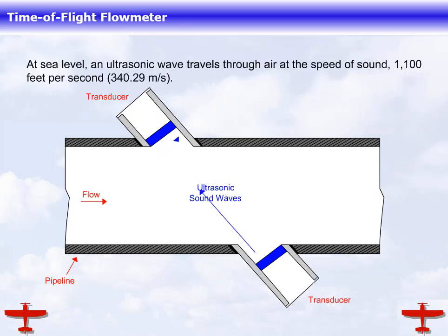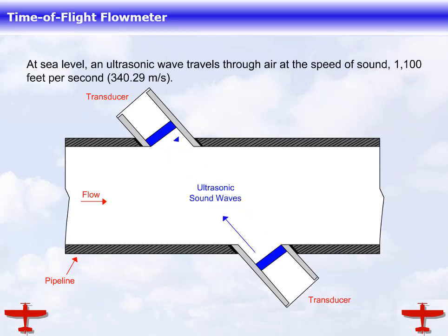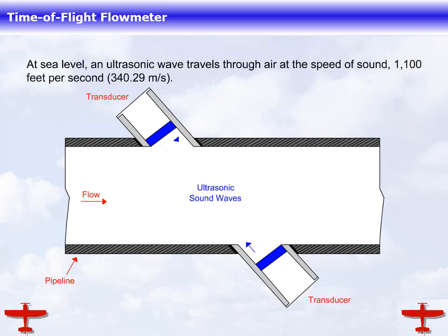At sea level, an ultrasonic wave travels through air at the speed of sound — 1,100 feet per second or 340.29 meters per second.